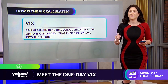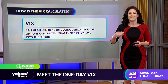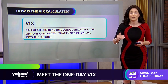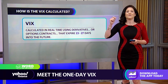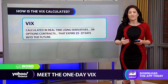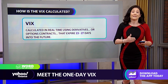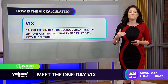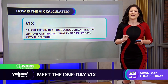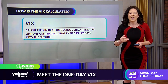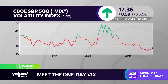The VIX is calculated using derivatives or option contracts that expire 23 to 27 days into the future. It's calculated in real time. And historically, when you see spikes in the VIX, it has coincided with financial distress. But traders have been noticing that this year and last year there seem to have been more muted levels. It's also worth noting that the contracts captured in the VIX expire every 23 to 27 days.